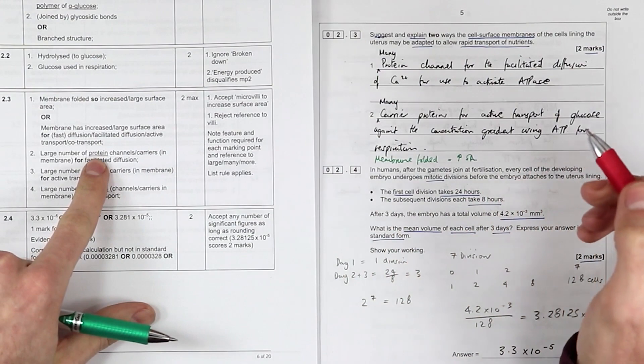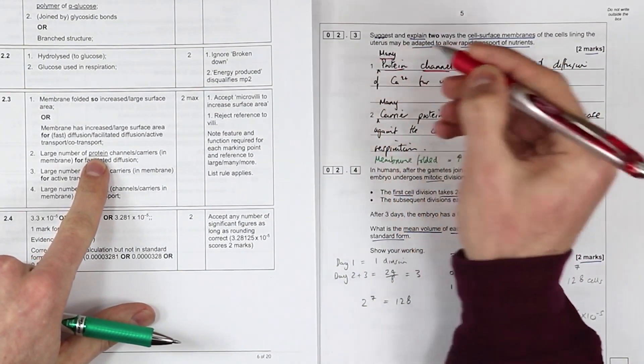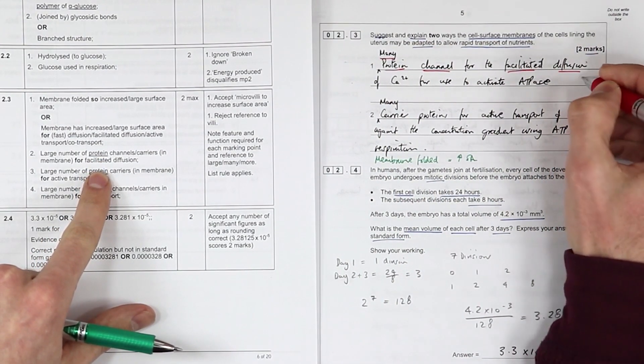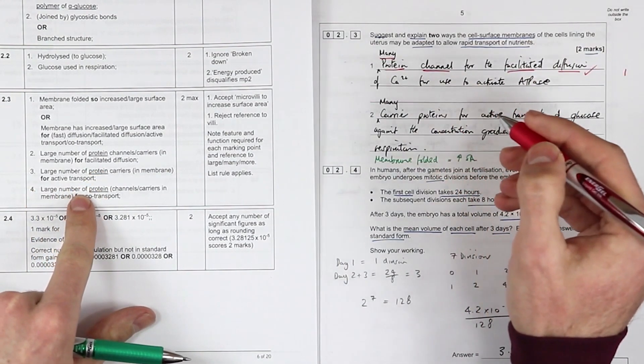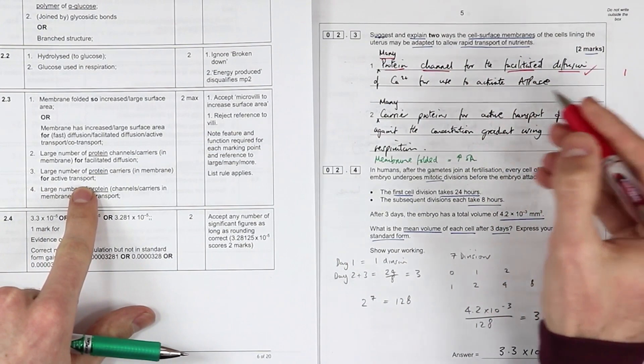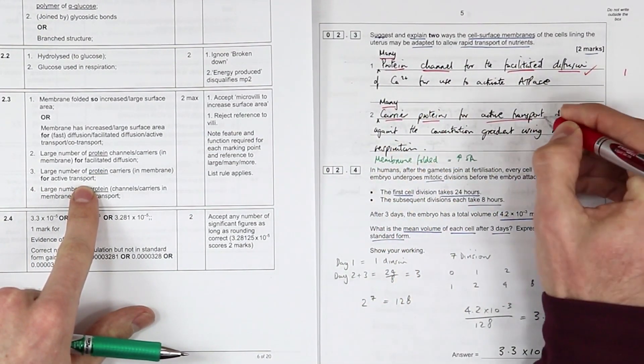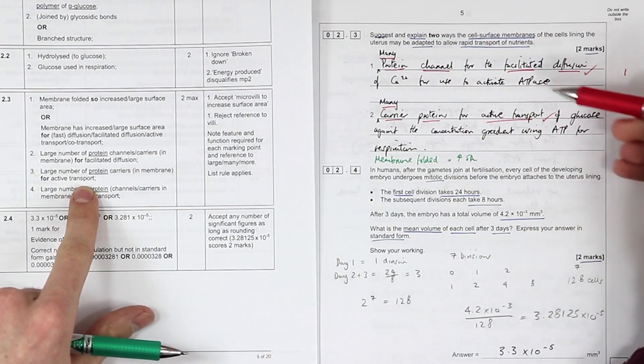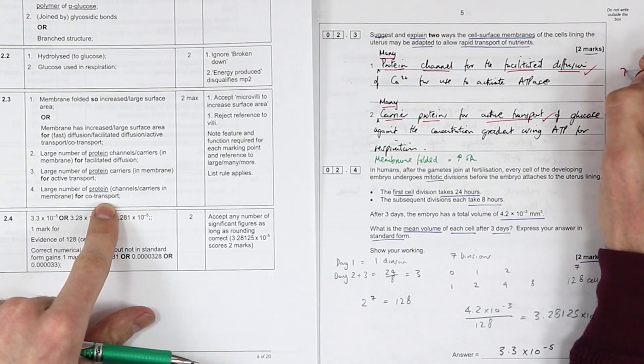Large number of protein channels—many, which I think needs to be in there—for facilitated diffusion. Large number of protein carriers for active transport. Note how it says active transport; I went with active transport because I've seen questions similar to this in the past. They generally will credit active transport over facilitated diffusion. Protein channels for co-transport—any of those were acceptable. Just make that into a two.